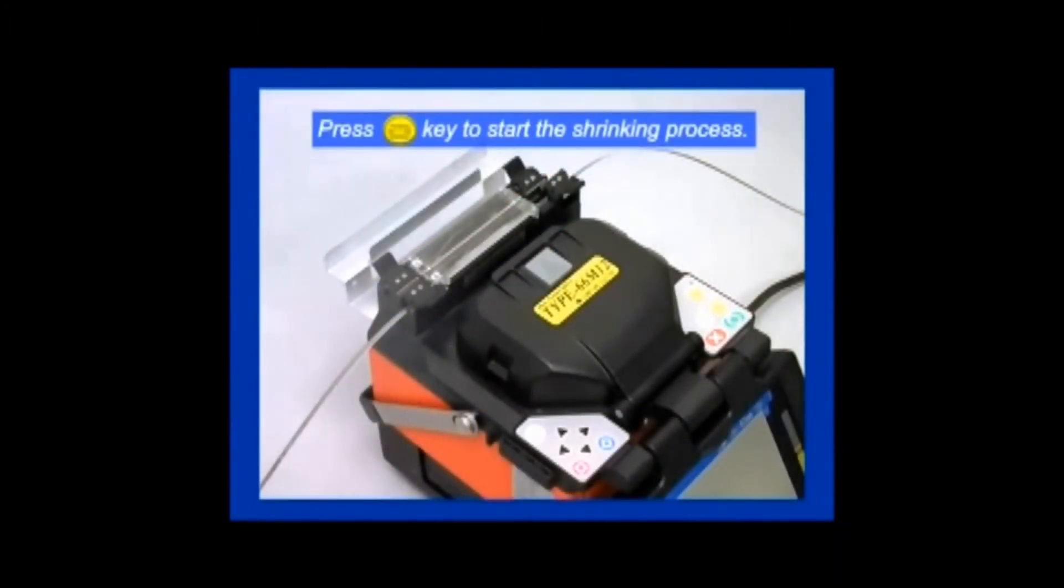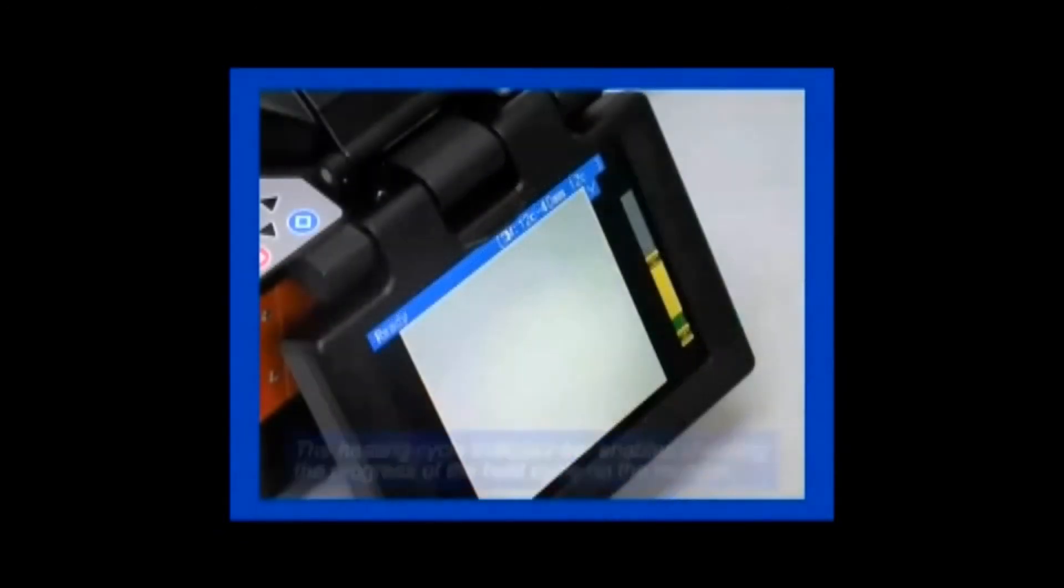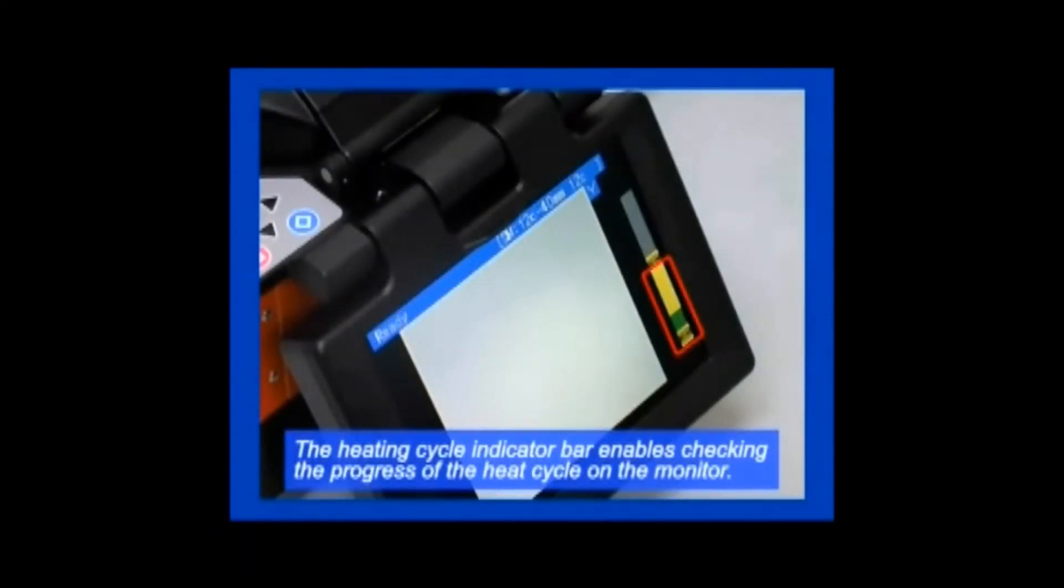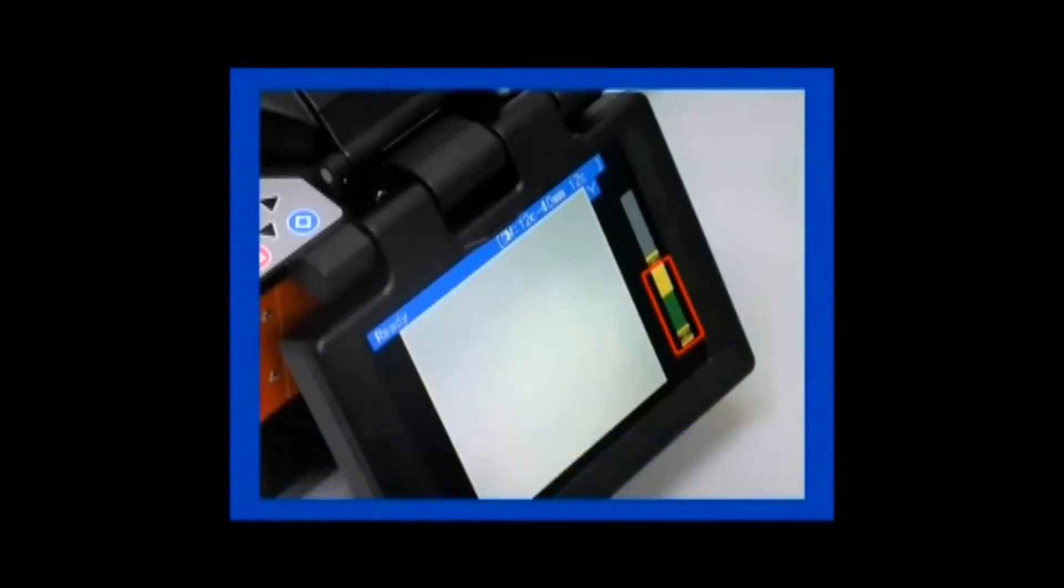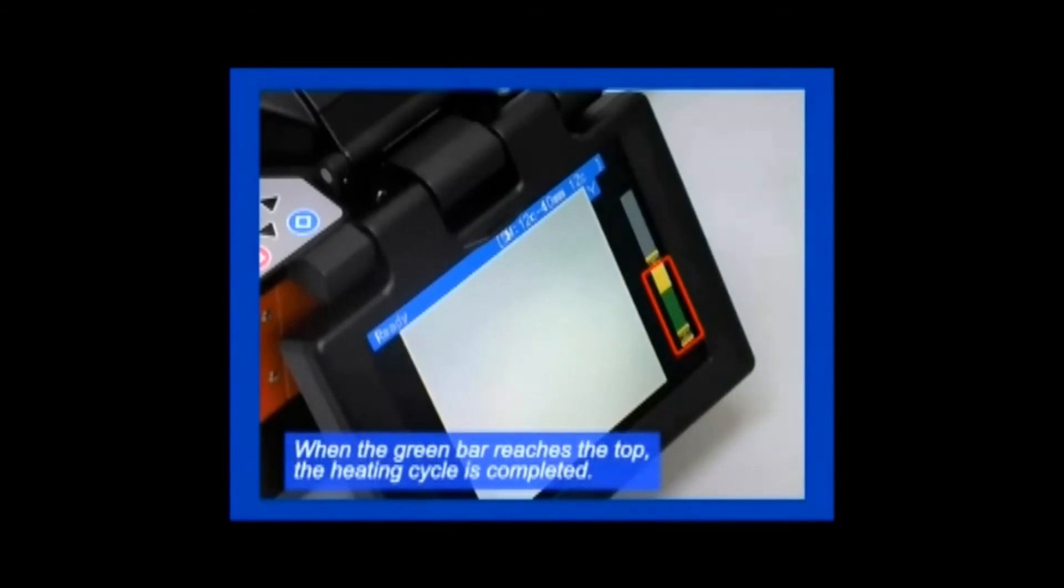The yellow key on the splicing machine is then pressed to start the heat shrinking of the protective sleeve. The heating cycle indicator bar on the right side of the splicing machine enables checking the progress of the heat cycle on the monitor as the green bar moves from the bottom to the top of the scale. When the green bar reaches the top, the heating cycle is completed.